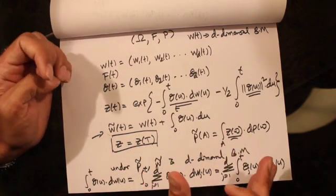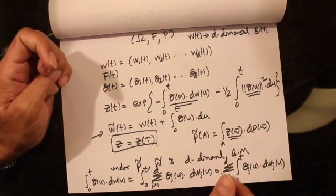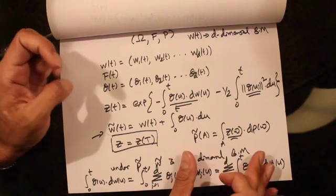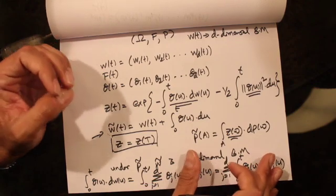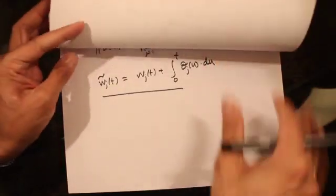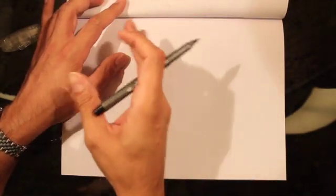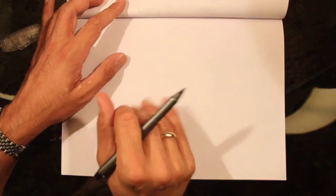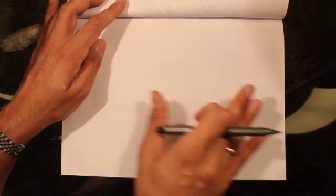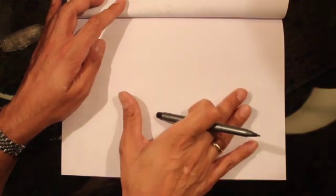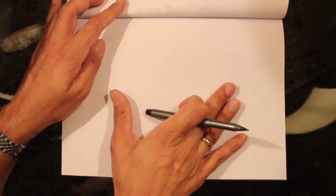Now let's move on and discuss the d-dimensional Martingale representation theorem. This discussion is going to be very similar to what we've already discussed when talking about the single-dimensional Martingale representation theorem.